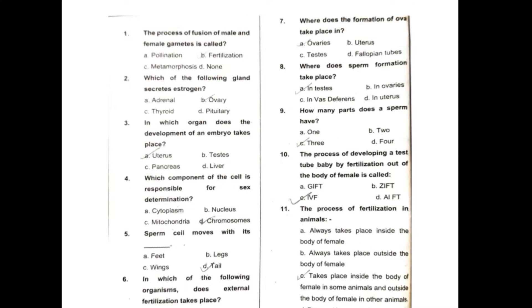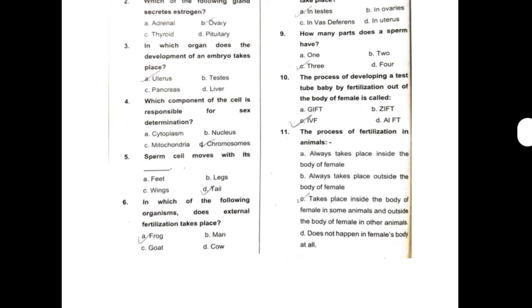Seventh, where does the formation of ova take place in? So this can be ovaries. Eighth, where does sperm formation take place? So this can be testes. Ninth, how many parts does a sperm have? So this can be three.